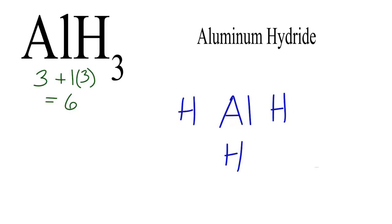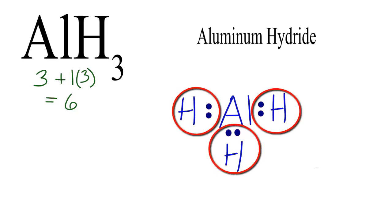Next we'll put electrons between atoms to form chemical bonds. We put six valence electrons around the aluminum. We only have six to work with. We know that hydrogen is an exception to the octet rule and only needs two valence electrons for a full outer shell. So all of the hydrogens are okay.